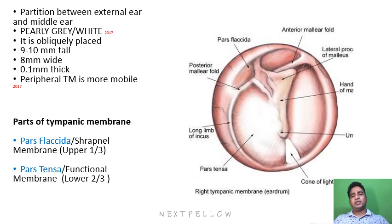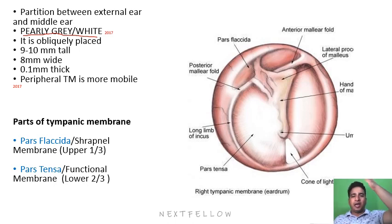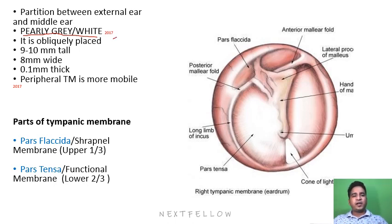What are the important points about the tympanic membrane as related to the examination? Firstly, the color. The color of the tympanic membrane is pearly white or pearly gray — this has been asked in exams. This tympanic membrane is not straight; it is obliquely placed in the external auditory canal at an angulation of 55 degrees.